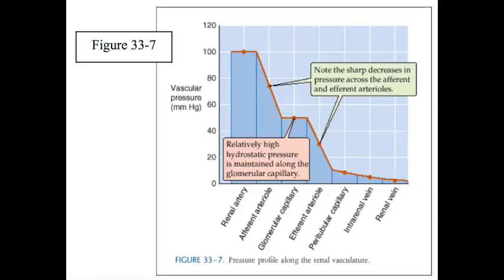The glomerular and the peritubular capillaries. As a consequence of this unique architecture, significant pressure drops occur in both arterioles.